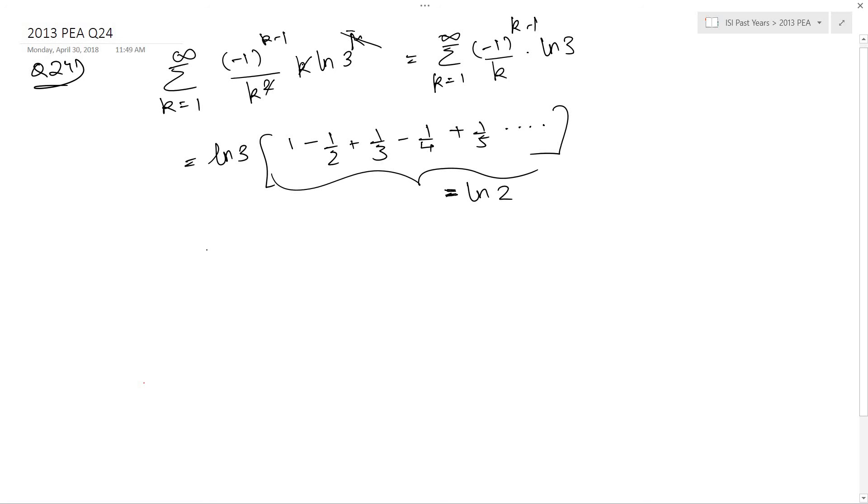So I recommend that you skip over this question. Anyway, for this particular question, the answer is ln 3 into ln 2, which is your option B.